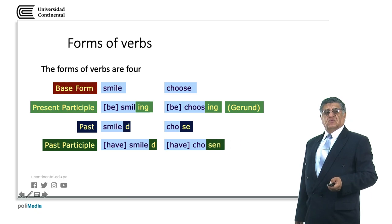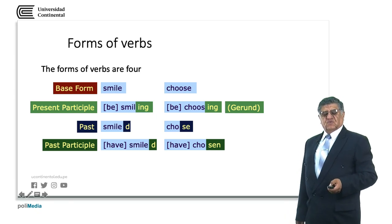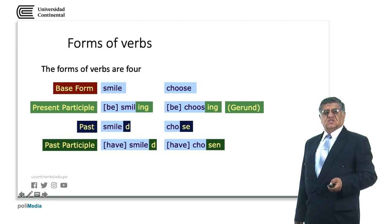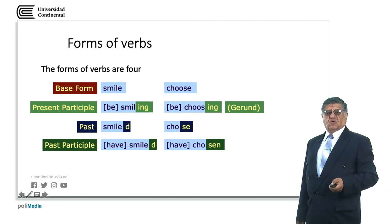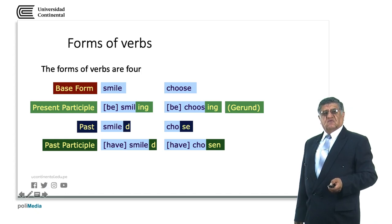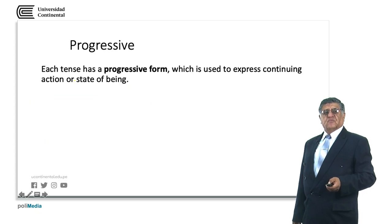The past participle follows the same rule — in most cases when the verb is regular, it is the same as the past tense form: have smiled. But for irregular verbs like choose, the past participle changes: chose in the past and chosen in the past participle — have chosen.